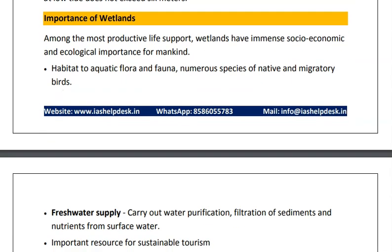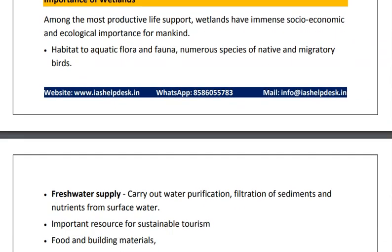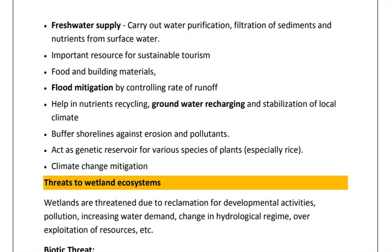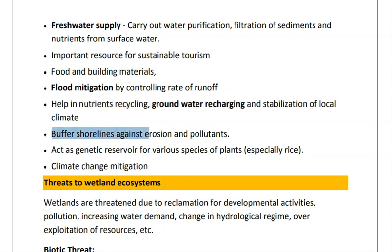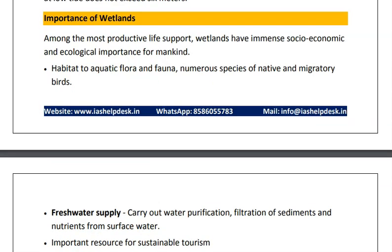Moving to what are the importance of wetlands. Wetlands are one of the most productive biomes and have socio-economic and ecological importance. They provide habitat for aquatic flora and fauna. They provide freshwater supply as they carry out water purification, filtration of sediments and nutrients from surface water. They provide tourism, food and building material, flood mitigation, help in nutrient recycling and groundwater recharging, buffer shorelines against erosion and pollutants, and act as genetic reservoir for various species of plants, especially rice.